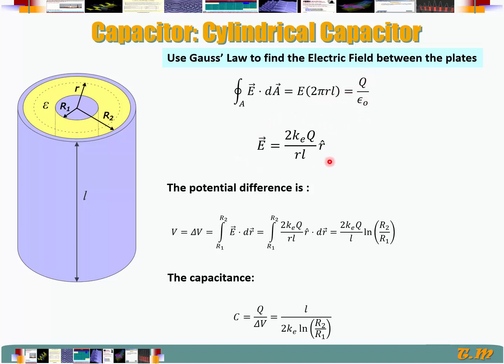So this is the expression for my electrical field: 2kQ over rL, radially outwards.